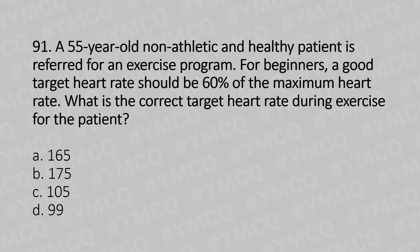A 55-year-old, non-athletic, and healthy patient is referred for an exercise program. For beginners, a good target heart rate should be 60% of maximum heart rate. What is the current target heart rate during exercise for the patient? Option A: 165, Option B: 175, Option C: 105, Option D: 99. And the answer is Option D: 99.